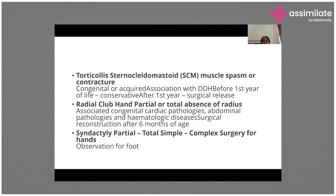All these developmental defects are totally compatible with life; you don't need to abort the child. Radial club hand involves partial or total absence of the radius. We do surgical reconstruction for this. Many times it is associated with cardiac, abdominal, or hematologic pathologies. If associated with so many problems, it is usually not compatible with life and the child may not survive. But if it is individual or with only two defects, we can easily handle it.